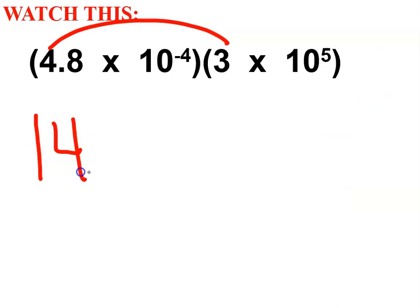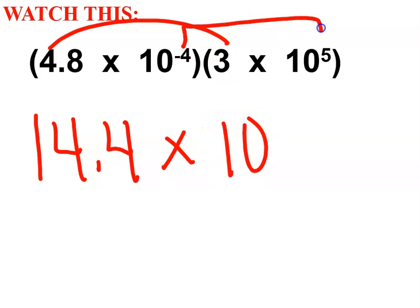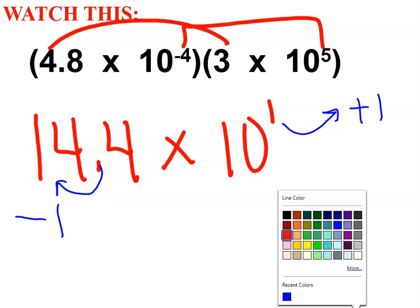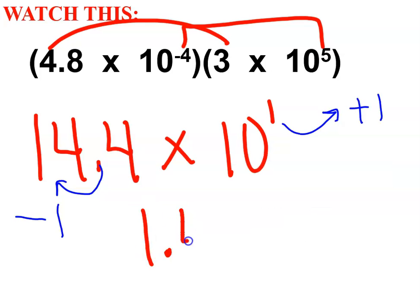And negative 4 plus 5 is 1. Now this is correct, but that is not allowed. So in order to be written in scientific notation, I'm going to move the decimal place one place value to the left, which means I move my exponent one place value to the right. See that? Minus and plus. They undo each other. So the final answer is going to be 1.44 times 10 to the second.